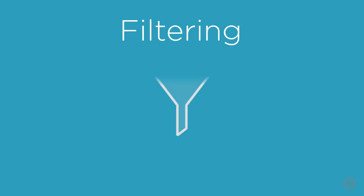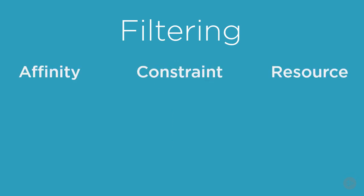So, filtering. Swarm currently supports three types of filters: affinity filters, constraint filters, and resource filters. But don't be put off by so many types — they're all really simple while still being really powerful.